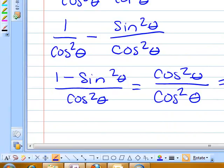Then you look for a common denominator, which would be cosine squared theta, which will leave you with 1 minus sine squared theta on the top. And you look at your Pythagorean identities.